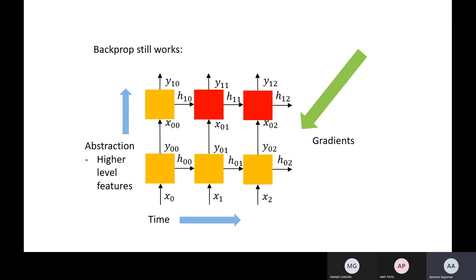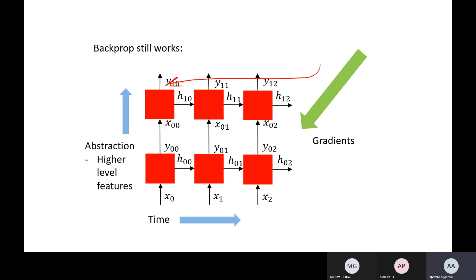Training uses back-propagation through time, because we back-propagate from the final time step towards the initial one — moving backwards through time at every step. This is how gradients are calculated.